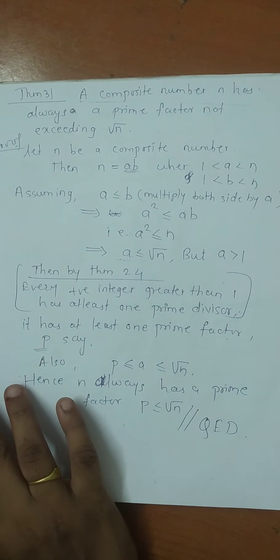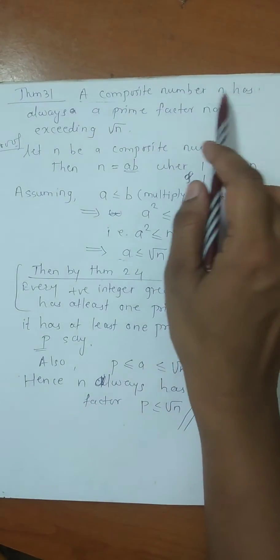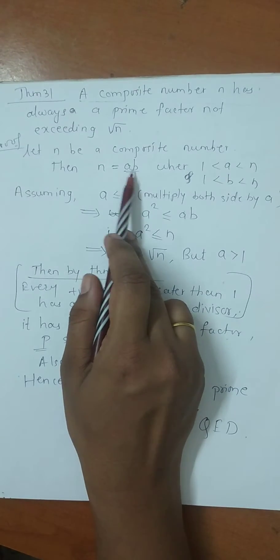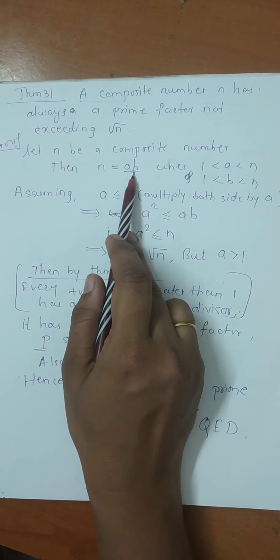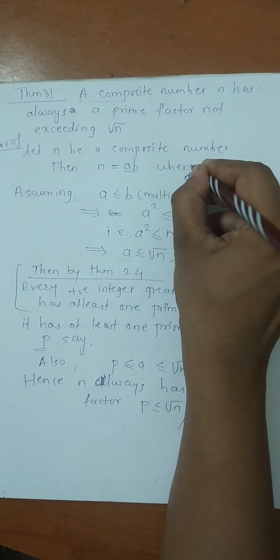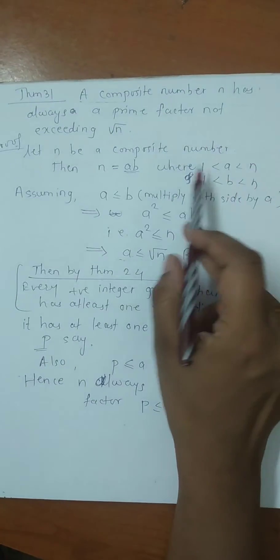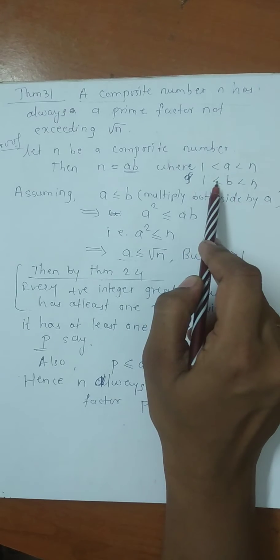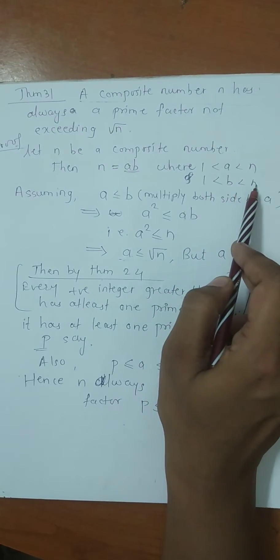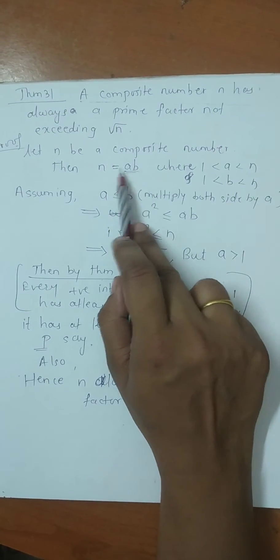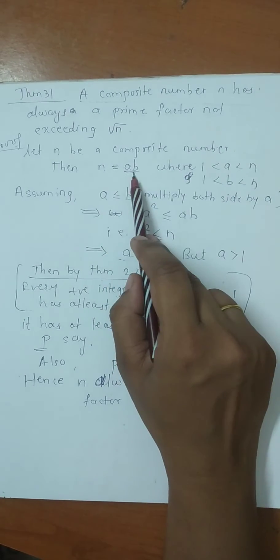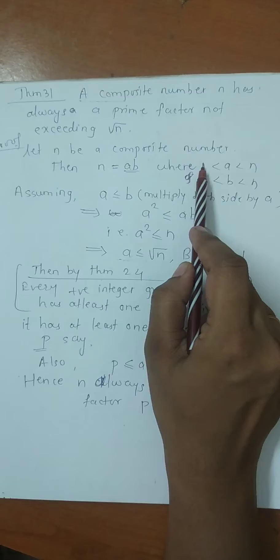Let n be a composite number. They have given us n is a composite number. So we can write composite number as factors of 2 numbers. Suppose n equals a into b where 1 is less than a is less than n, 1 is less than b is less than n. Yes, a and b, n is factor, and the composite number, so that is not equal to 1.